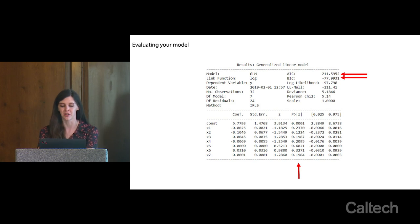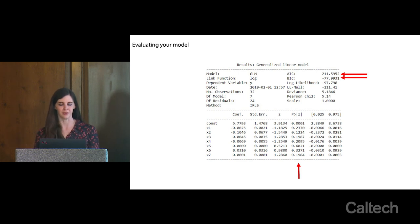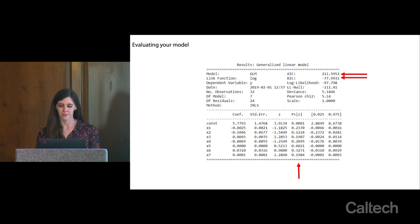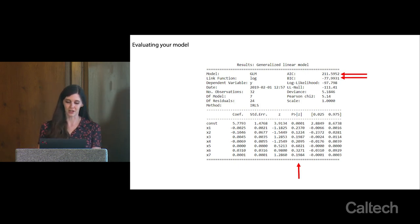AIC and BIC are information criteria that tell you how good a job you did fitting your model, with a walkthrough in the notebook explaining what these reflect in terms of model parameters and data likelihood. We'll wrap up and move to the notebook section. Are there any questions before we jump in?